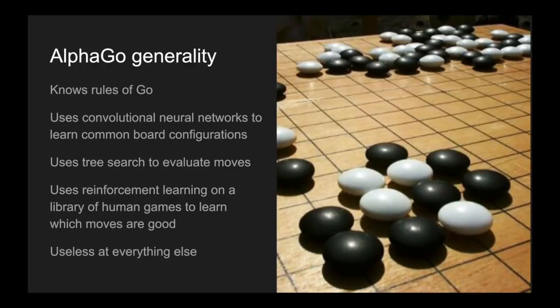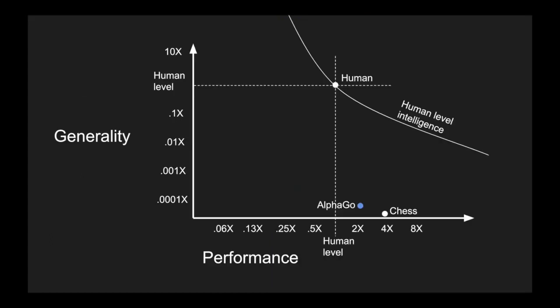But like Stockfish, it's useless at anything that's not Go. So while it has a few tricks that allow it to be more general, it is still very narrow in its applications. So on our plot, we might put it here. Again, far exceeding human-level performance, but still very low on the generality axis.